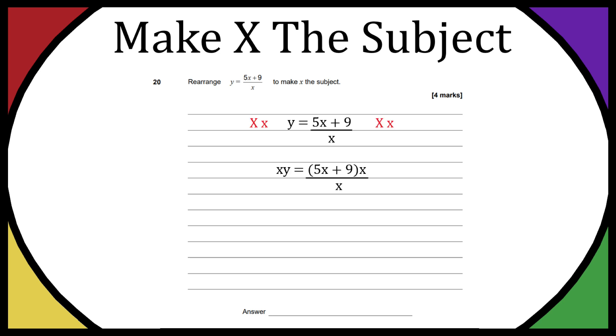Now by doing that on the left hand side we're going to have xy and because we're timing the right hand side by x we're going to get rid of that x on the bottom because it's going to cancel out. So that will eventually leave us with xy equals 5x plus 9 because the x is cancelled out.